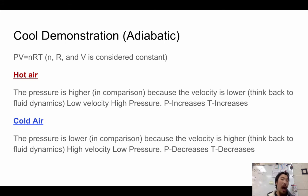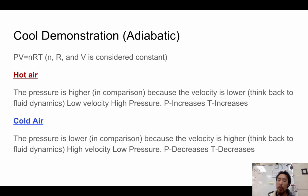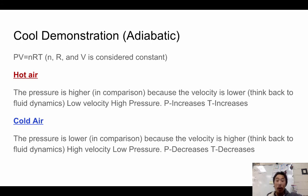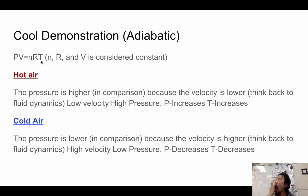The same works in reverse: if we decrease the opening of our mouth, the continuity formula tells us velocity increases. If velocity increases, pressure goes down, and if pressure goes down, the temperature also has to go down. That's why you can blow two different temperatures.